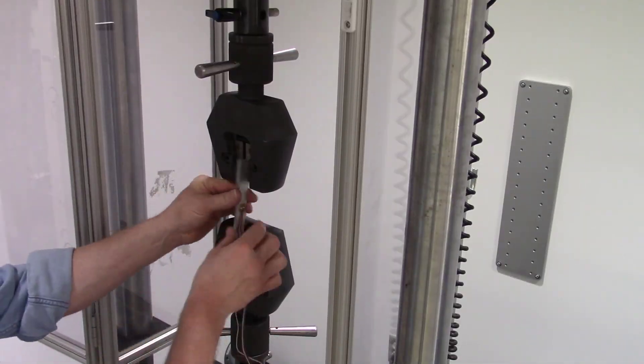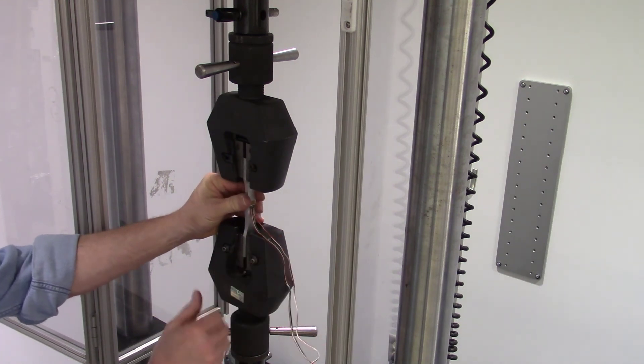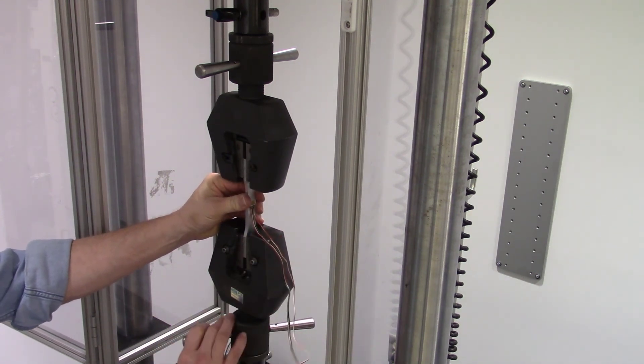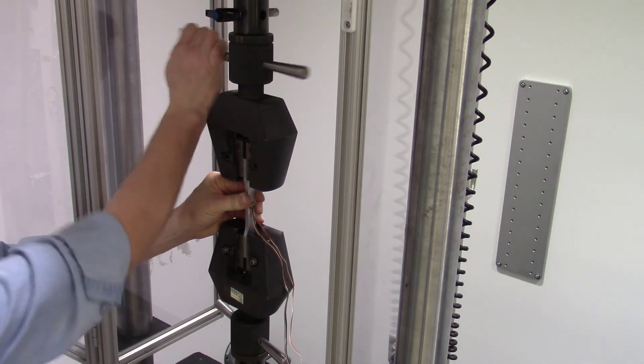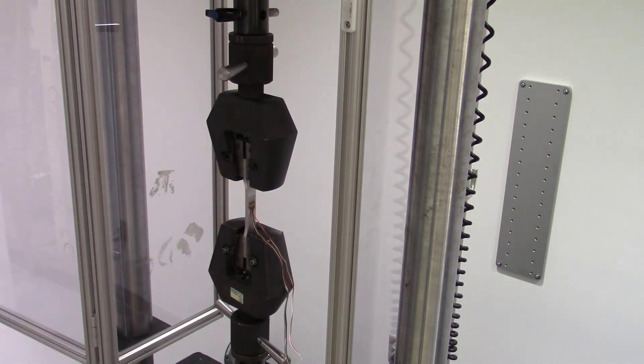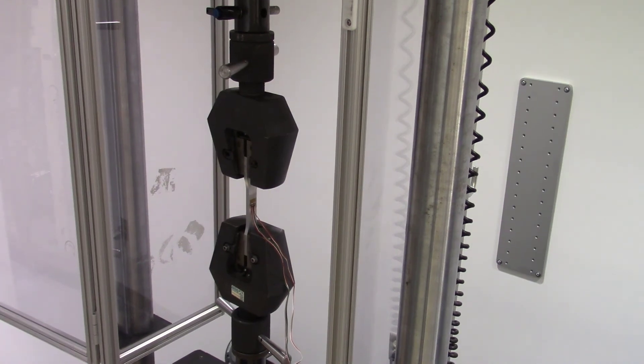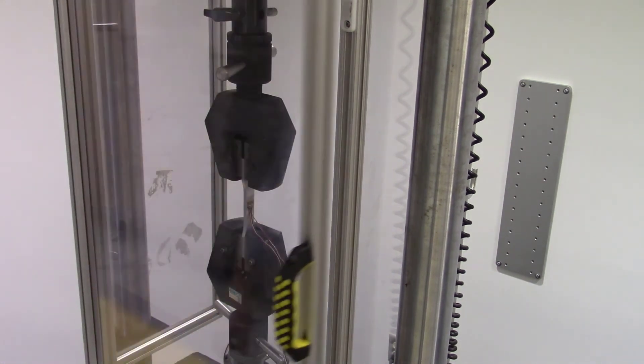After validating the rosette gauge, install the dog bone specimen into the grips. Tighten the grips until firmly snug, but be careful not to over-tighten, which will permanently damage the clamping mechanism. When done, close the guard door.